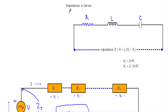In this video I will show you how we reduce several impedances, when they are connected in series, to a single impedance which is called equivalent impedance or total impedance of that circuit. Impedance is the opposition to current flow due to a resistor, inductor, or capacitor, or the combination of them.